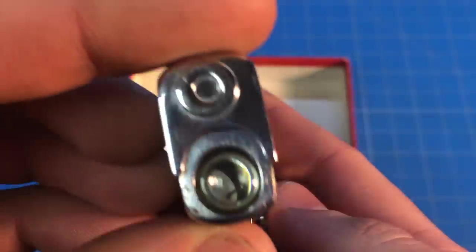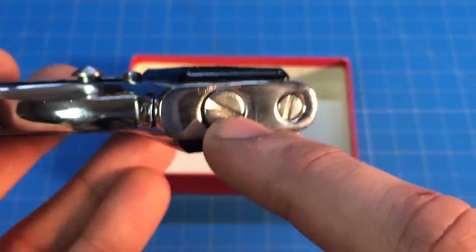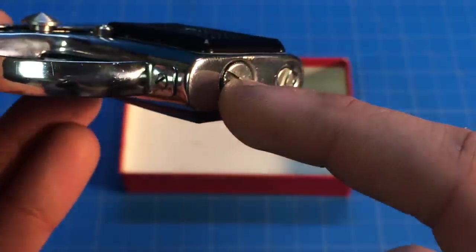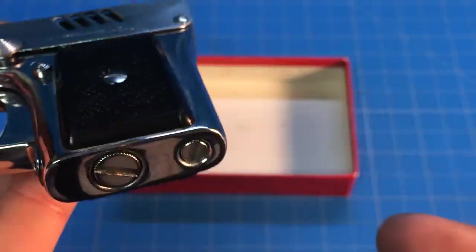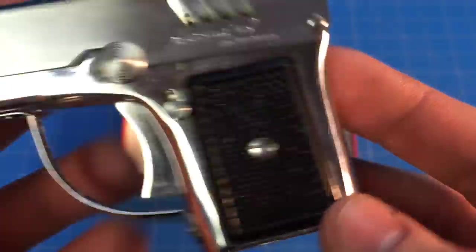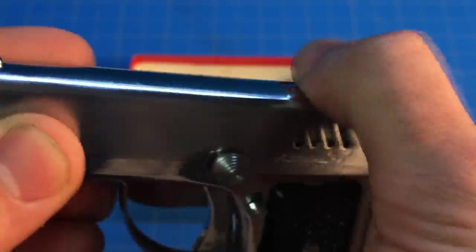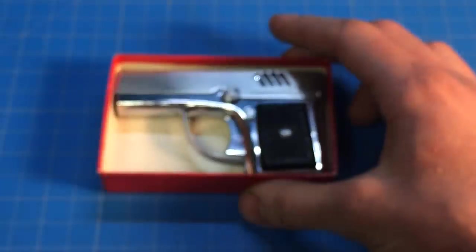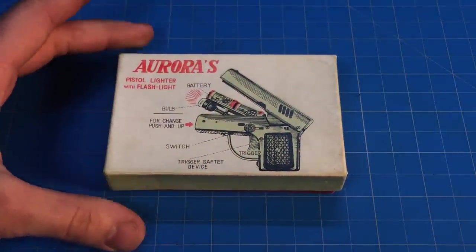On the bottom you have your refill for regular lighter fluid, and then you can unscrew this and place a new flint for the lighter. Really cool. Let me know what you think in the comments below. Thanks for watching!